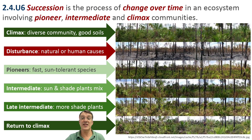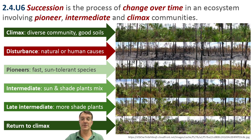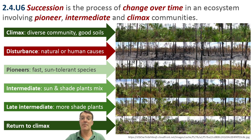Succession moves through distinct stages over time called seres — S-E-R-E. We start with a climax community at the top, which may be disrupted by disturbance. Pioneer species then colonize the area, followed by intermediate stages with increasing complexity, eventually returning to a climax community if left undisturbed.